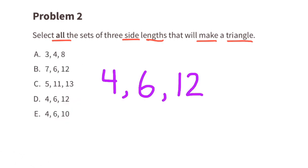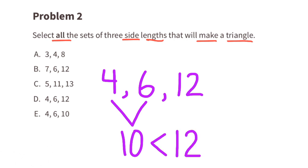For set D with side lengths 4, 6, and 12: 12 is the longest side length, so 4 plus 6 needs to be greater than 12. Since 4 plus 6 is 10 and 10 is less than 12, the side lengths for D will not form a triangle.